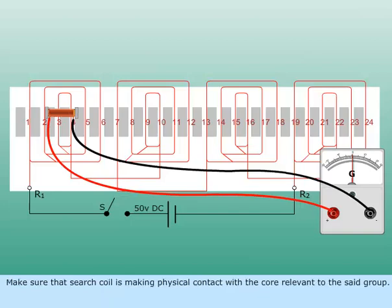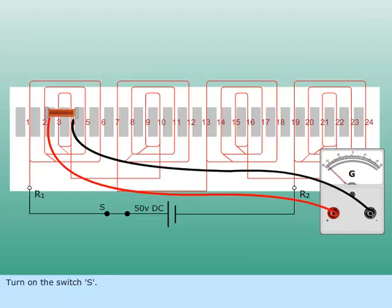Make sure that the search coil is making physical contact with the core relevant to the set group. Turn on the switch S.